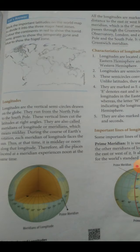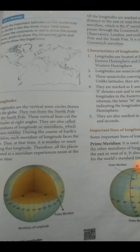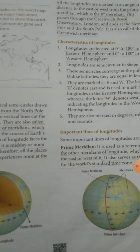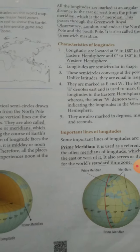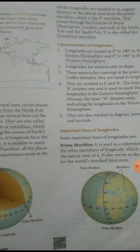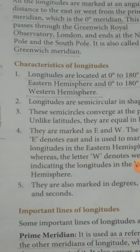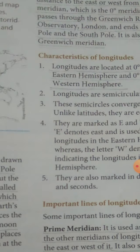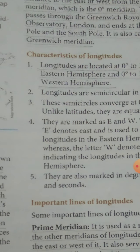The word meridian is derived from the Latin word 'meridians.' It means midday. We use AM and PM to express time. AM stands for ante-meridian, meaning before noon, and PM stands for post-meridian, meaning after noon. All longitudes are marked at an angular distance to the east or west from the prime meridian, which is the zero degree meridian.